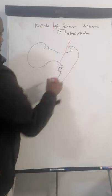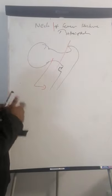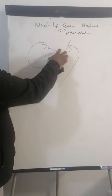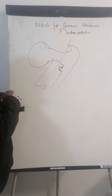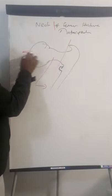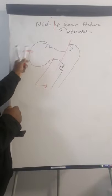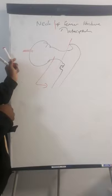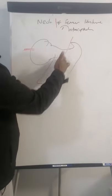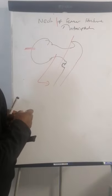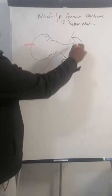Let's talk about intracapsular fractures specifically. These are more problematic because they have potential to damage the blood supply to the neck of the femur and also to the head. Remember there's an artery called the foveal artery that supplies the head, so the head may still get some supply, but the neck itself is dependent on the medial and lateral circumflex arteries. If you have a fracture here, you risk damaging both of those circumflex arteries.